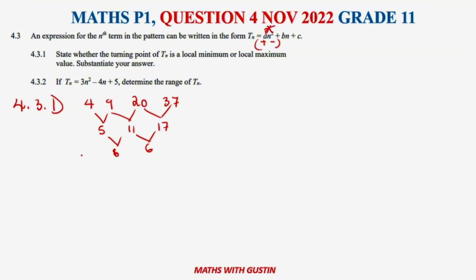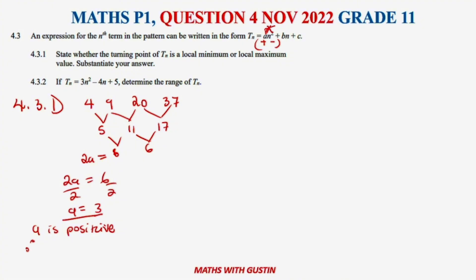The common difference is 6, so 2a equals 6, which gives a equals 3. Since a is positive, the graph of tn has a local minimum. If a were negative, it would be a local maximum. That is the reasoning required.